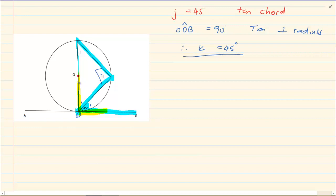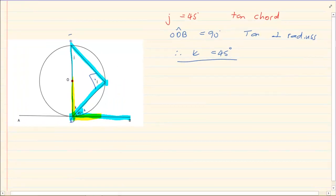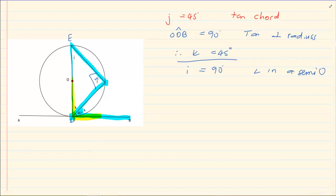For I, you could say sum of angles of a triangle, or simply that if ED is a diameter then I is 90 degrees — angles in a semicircle. Either way, I plus J plus K equals 180 degrees, sum of angles of a triangle, and solving gives I equal to 90 degrees.